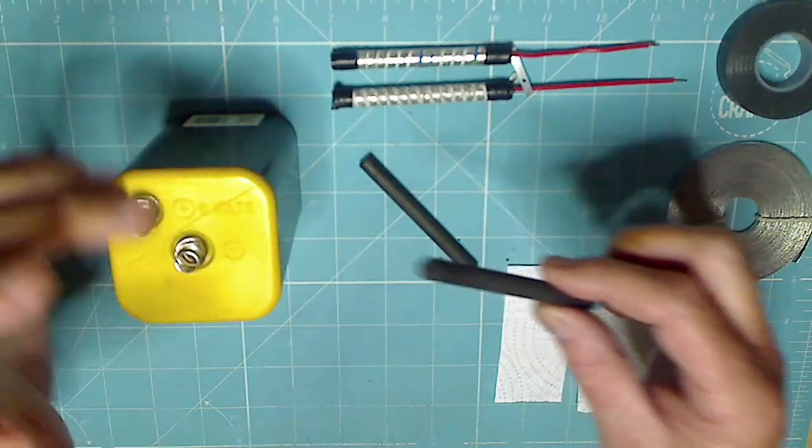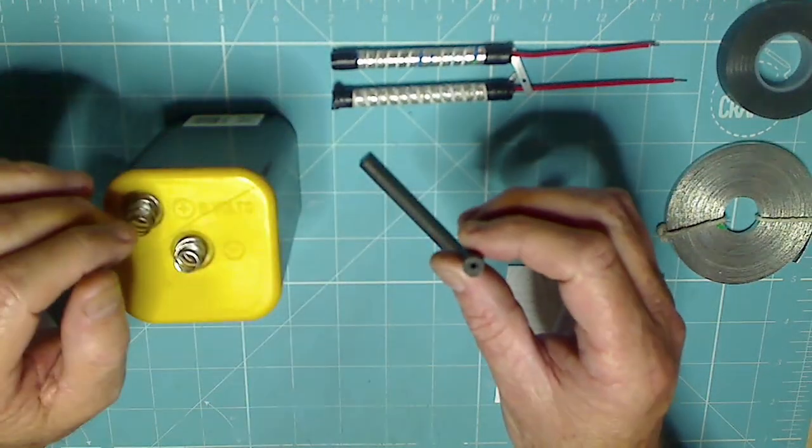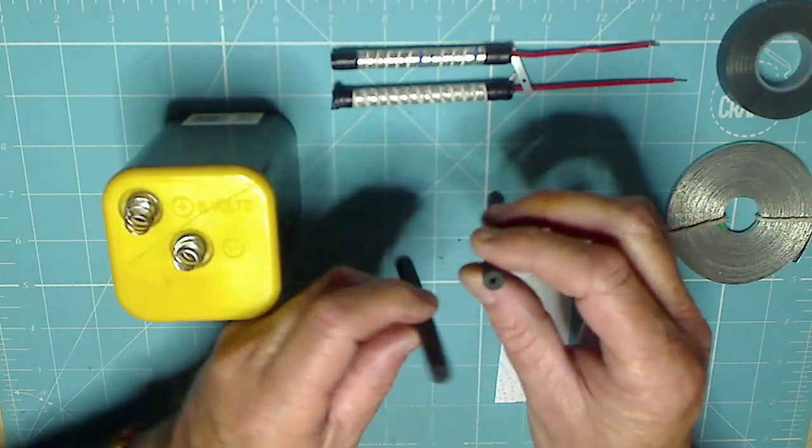Inside here you've got four individual cells and inside these individual cells you can extract this carbon rod. Now there's four of them in there obviously, so there's one, two, three, four and I've drilled a small hole in the top to take a wire.